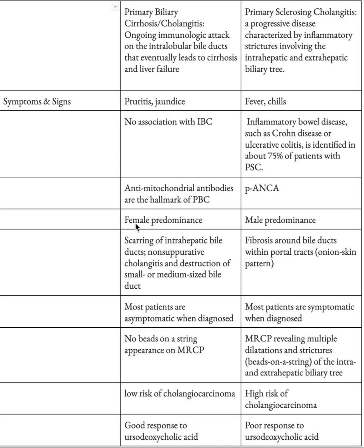In PBC you see female predominance, whereas in PSC you see male predominance. In PBC you will see scarring of intra-hepatic bile ducts, non-suppurative cholangitis, and destruction of small or medium-sized bile ducts.